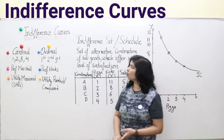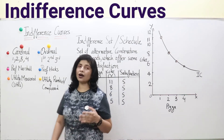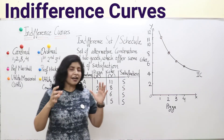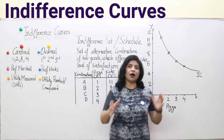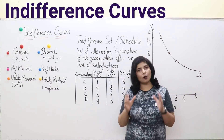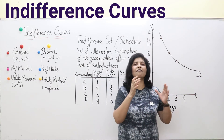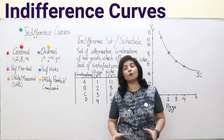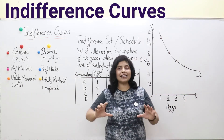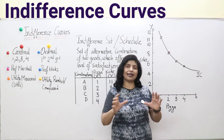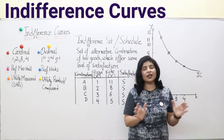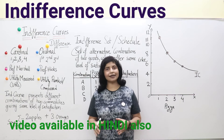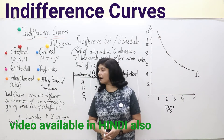Today we will discuss indifference curves. An indifference curve gives alternative combinations of two commodities which give the same level of satisfaction to a consumer, making the consumer indifferent towards those combinations. So what is the definition of an indifference curve?